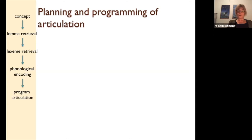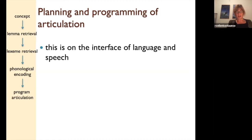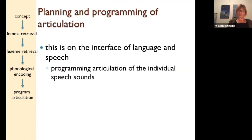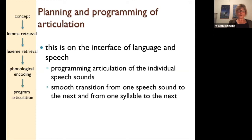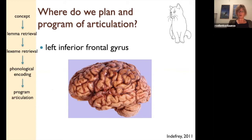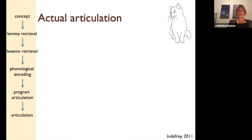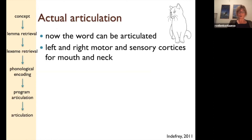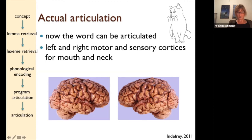After the phonemes have been filled in and the phonological rules applied, you need to plan and program your articulation. This is on the interface of language and speech. Some people say it's language, others say it's speech — I prefer to say it's the interface. It's programming your articulation of the individual speech sounds and also programming the smooth transition from one speech sound to the next and from one syllable to the next. That happens in Broca's area, the left inferior frontal gyrus, sometimes called Dronkers' area nowadays. And then you articulate the word — for that you need the left and right motor and sensory cortices for mouth and neck, around the Rolandic fissure, both left and right.